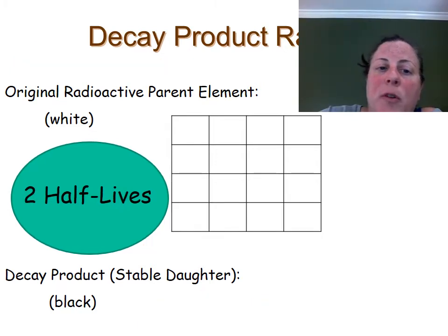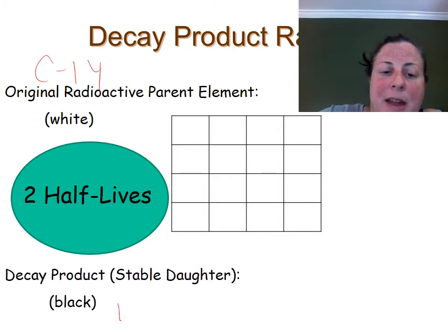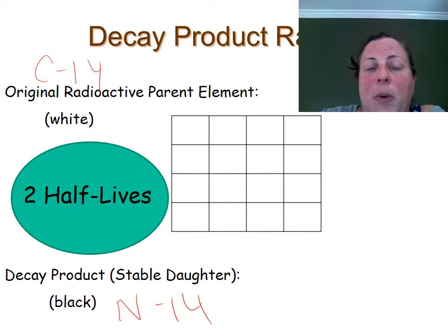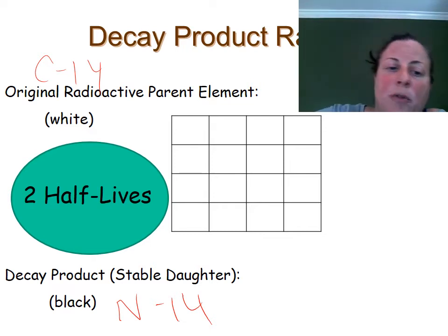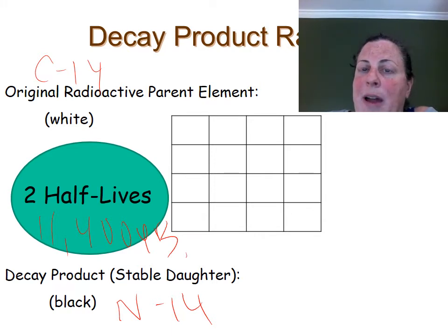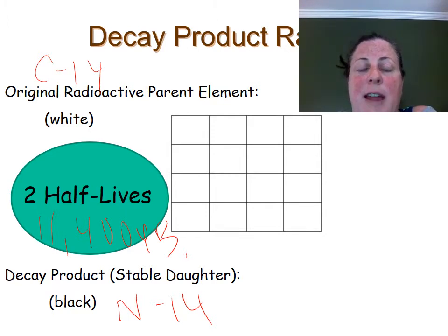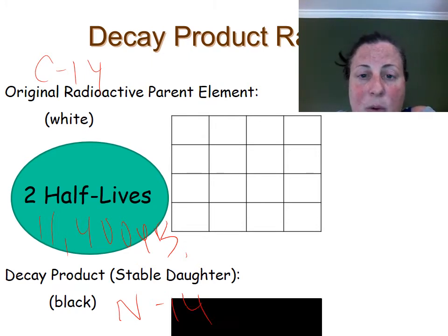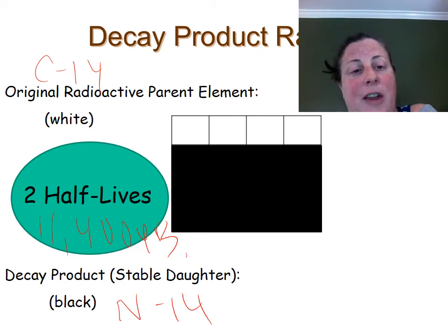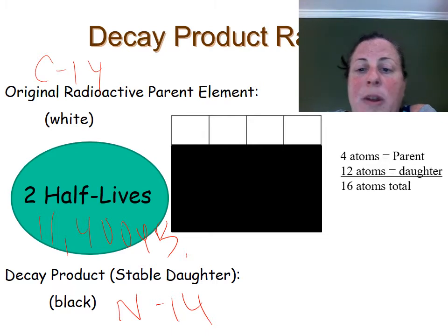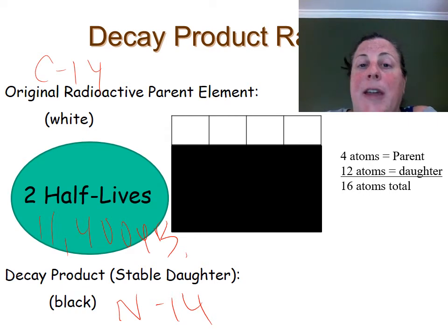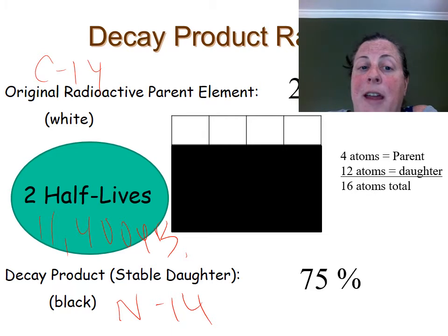At the second half-life, using carbon-14 as our radioactive parent and nitrogen-14 as the daughter, two half-lives means 5,700 years times two, so our rock is now 11,400 years old. Half-life means half of the radioactive atoms have changed into the stable daughter. We were left after the first half-life with eight radioactive atoms, so now half of those — four — change into the daughter. Of our original 16 atoms, we now have four parents left and twelve have changed into the daughter. At 11,400 years old, we now have 75% daughter atoms and only 25% remaining as the parent element.